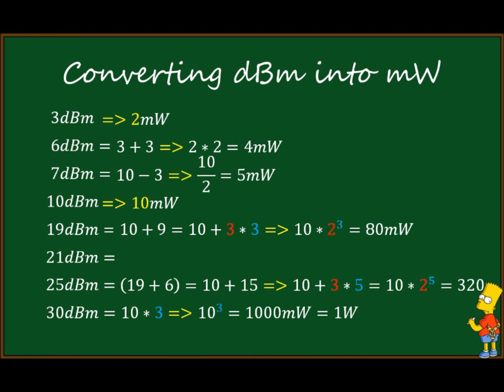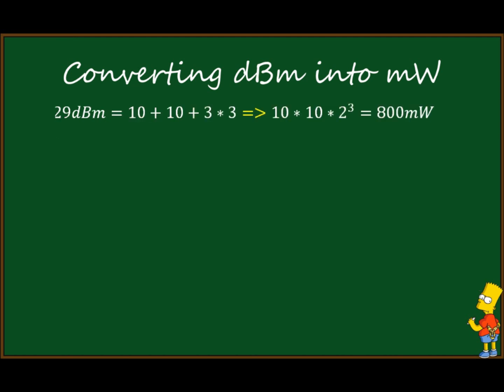30 dBm is 10 × 3, so 10³ = 1000 milliwatts, or 1 watt. As shown in my other video, 1 watt is 30 dBm. For 21 dBm: 21 = 30 − 9, so by our rules that's 1000 / 8 = 125 milliwatts.